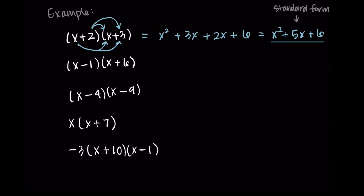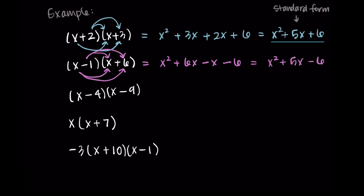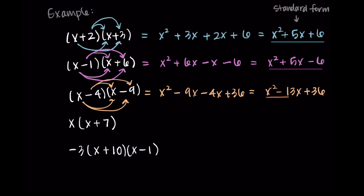Next, x minus 1 times x plus 6: x times x is x squared, plus 6x, minus x, minus 6. Combining the x terms gives x squared plus 5x minus 6. Then x minus 4 times x minus 9 gives x squared minus 9x minus 4x plus 36, which combines to x squared minus 13x plus 36. And x times x minus 7 gives x squared minus 7x, already in standard form.